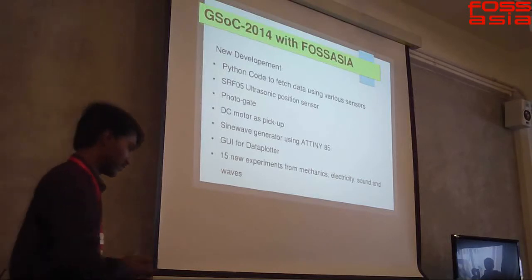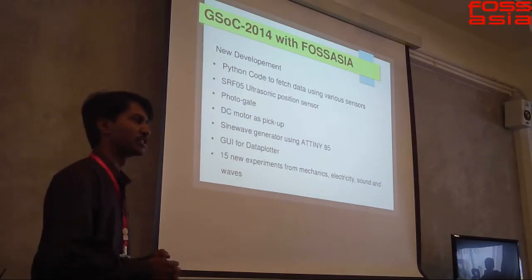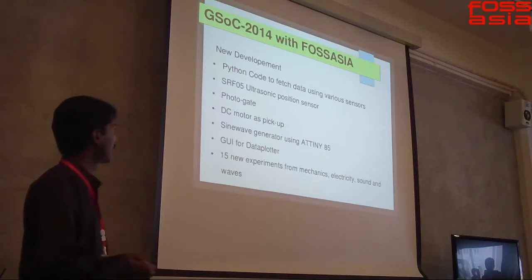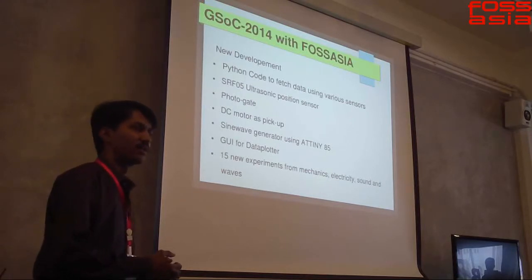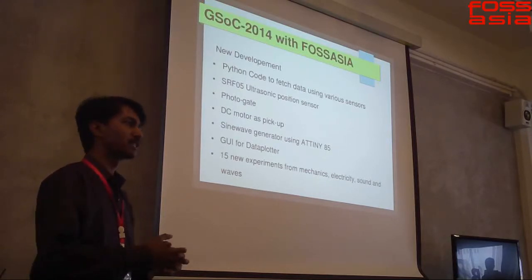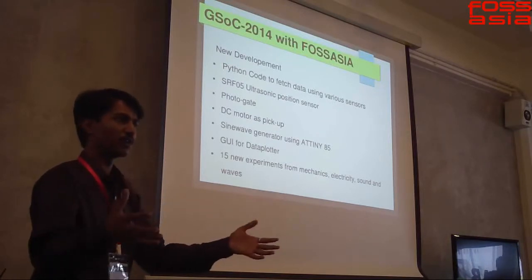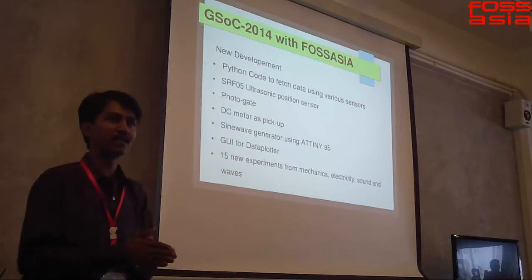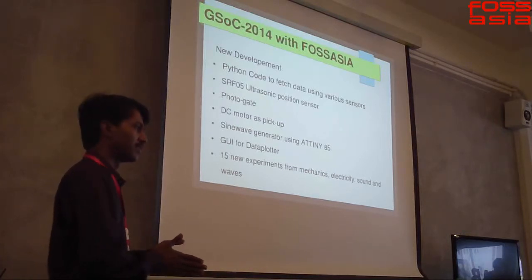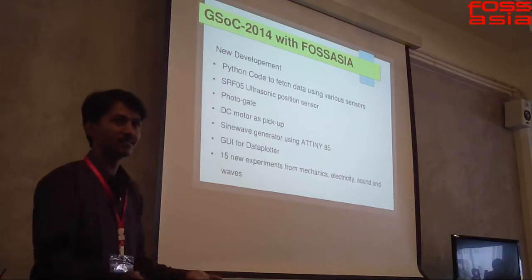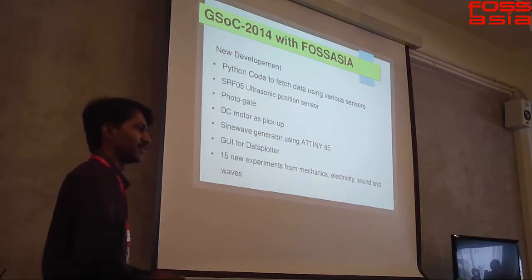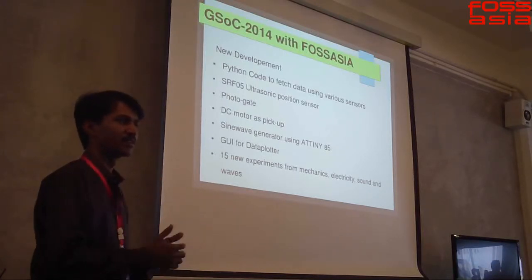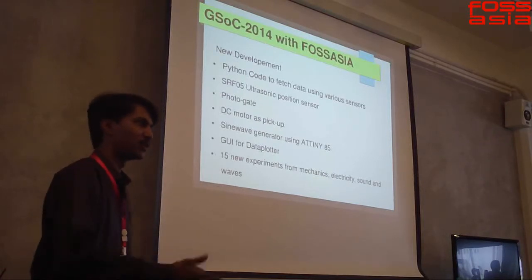Last year I had an opportunity to work on this GSoC project under FOSS Asia, and we could develop code for accessing new sensors like the SRF-05 ultrasonic sensor. There are instruments available for doing mechanics experiments - verifying Newton's laws, momentum, collisions - but those devices are really very costly. Some American proprietary devices cost a couple of thousand dollars, but with this code and some homemade apparatus you can bring down that cost to just one or two percent.